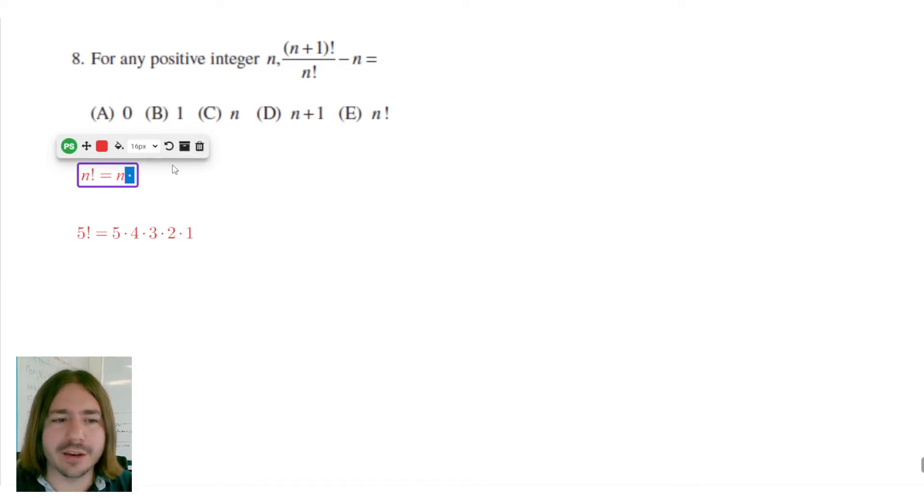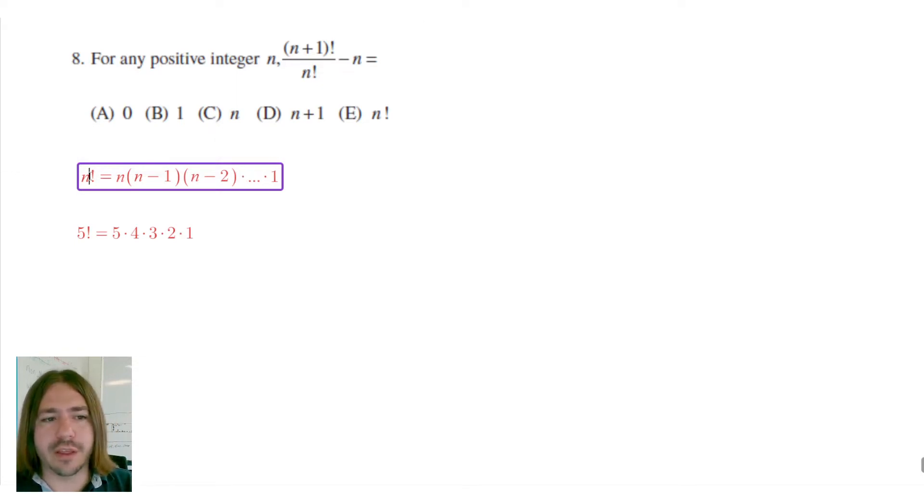Now the number that comes before n is n minus one, because if n is five, then the number that comes before that is five minus one, which is four, right? So it's n minus one times the number that came before that, which is n minus two. And then you just keep going until you get all the way down to one.